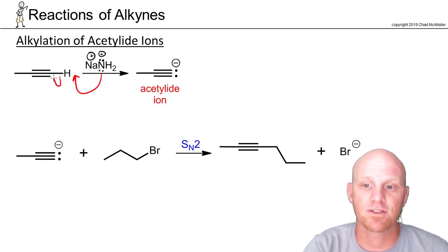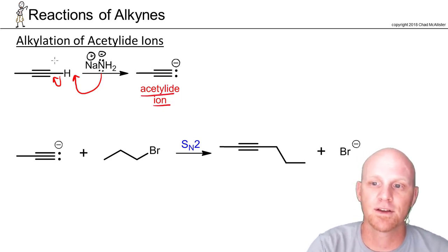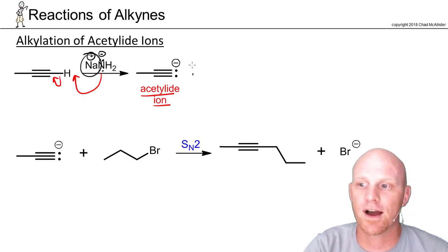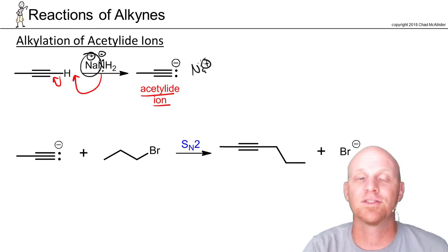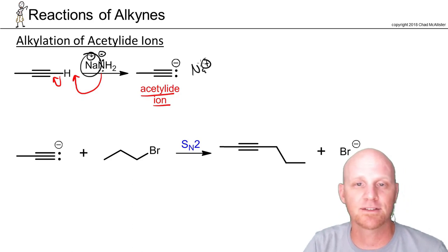We'll just come and deprotonate that terminal alkyne and we'll form here as the product, the acetylide ion. Sometimes we write it with the sodium counter ion next to it, sometimes we don't. Either way, the sodium is just going to be a spectator ion anyways.